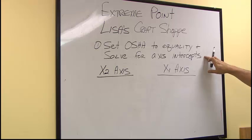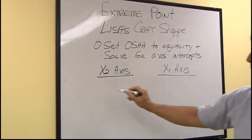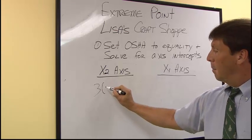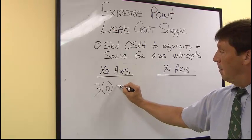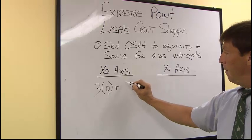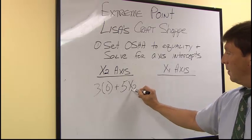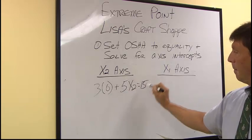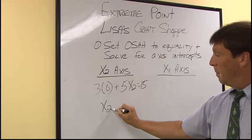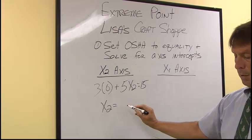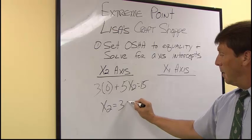We do so by plugging a zero into the equation. For the x2 axis, we set x1 equal to zero, and we get x2 equal to three, and of course, x1 equal to zero.